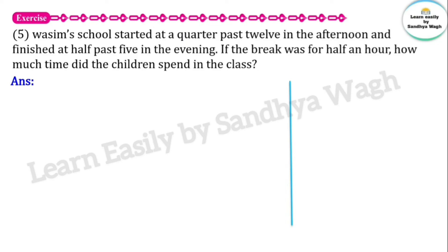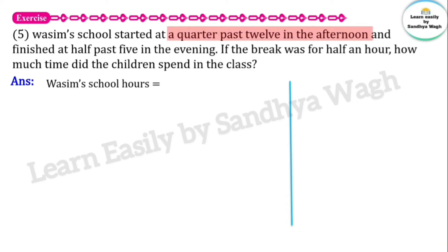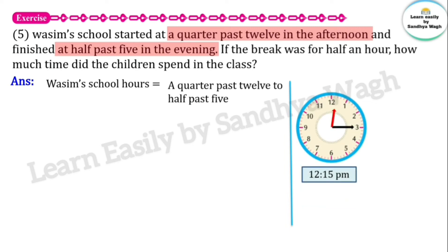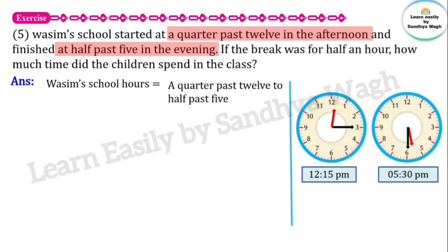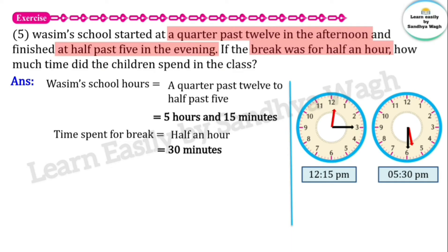Wasim's school finished at half past 5, meaning 5 hours and 30 minutes. The school had a break time of half an hour, which is 30 minutes. Counting from quarter past 12 to half past 5, Wasim's school had a total of 5 hours and 15 minutes. The break time was 30 minutes.